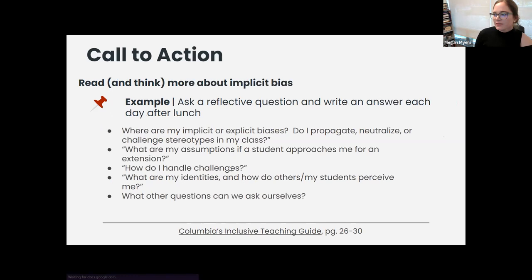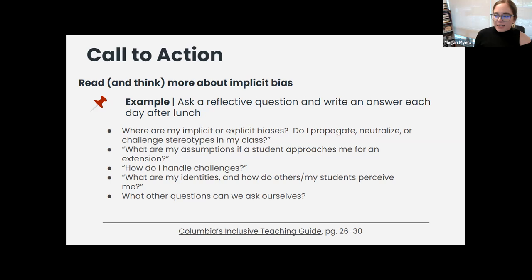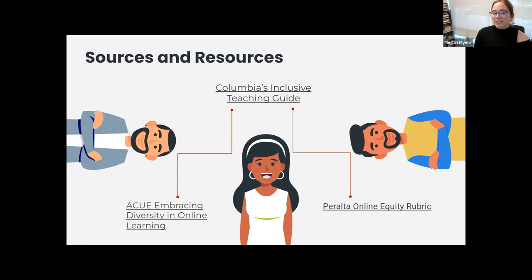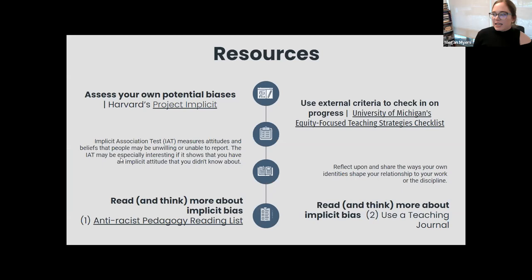Taking time to be reflective on ourselves and our own bias is an important component. We're going to send you all these slides, which have lots of links. Our sources and resources include Columbia's inclusive teaching guide, the Peralta online equity rubric (like QM but for equity), the ACUE Embracing Diversity in Online Learning, Harvard's Project Implicit, an equity-focused teaching checklist, and an anti-racist pedagogy reading list.